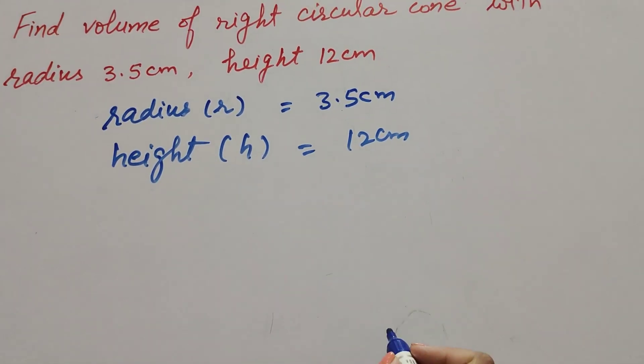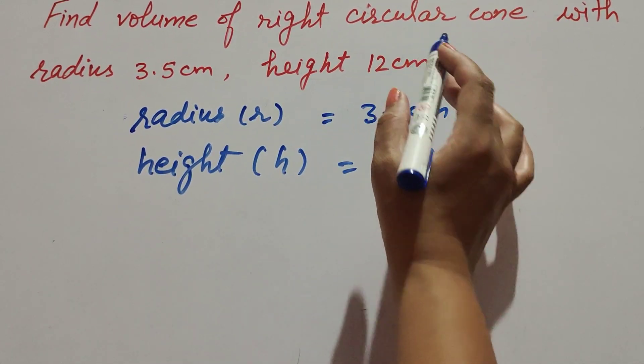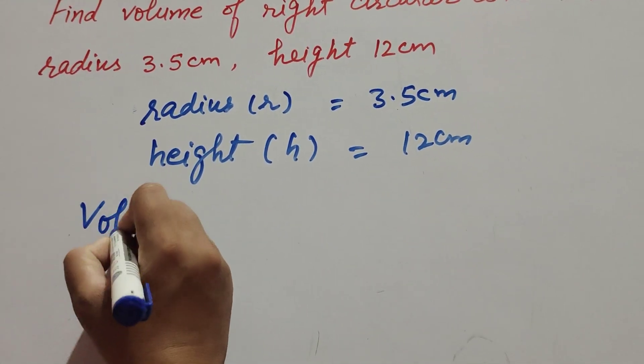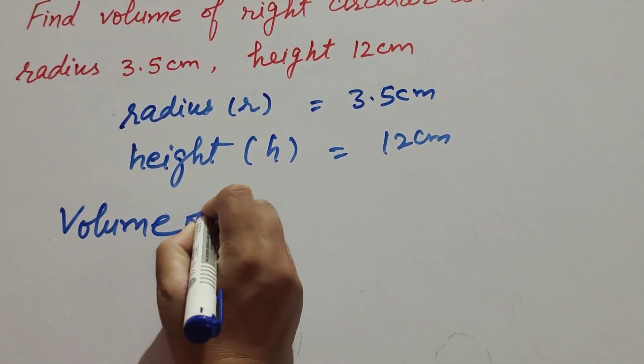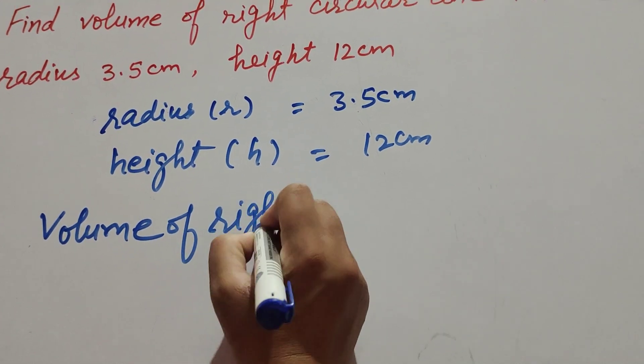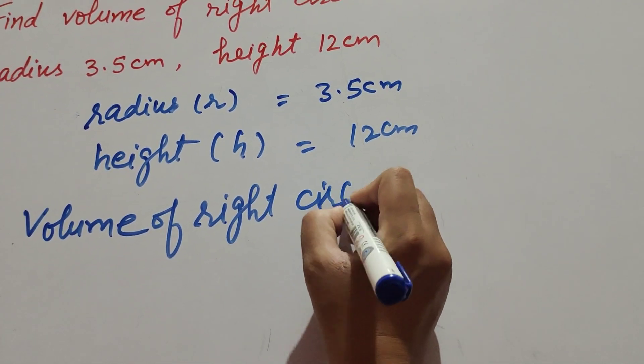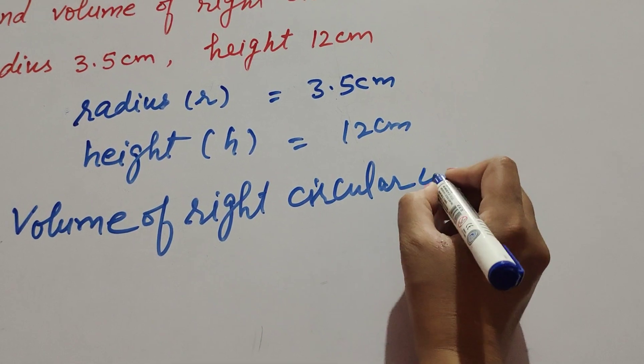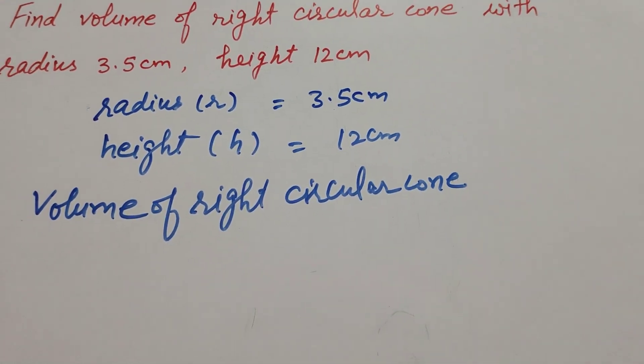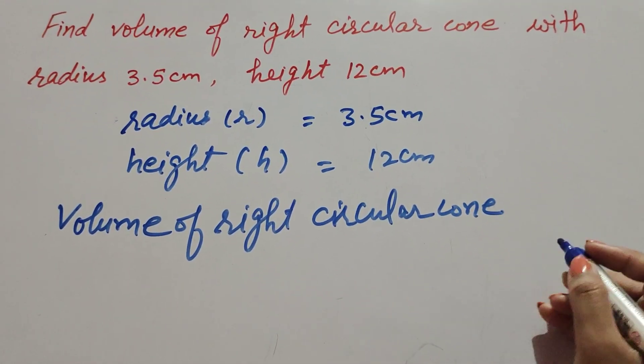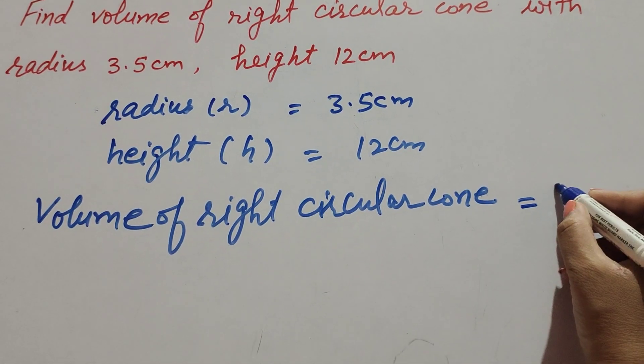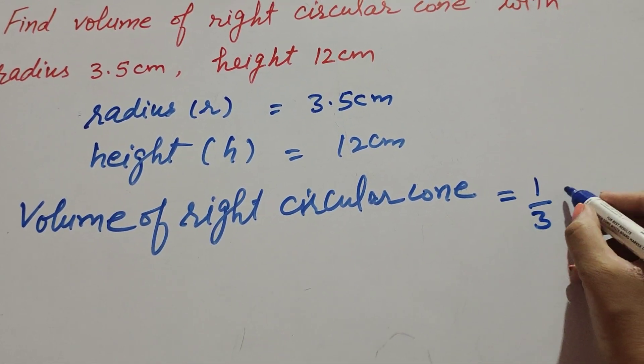We find volume of right circular cone. Its radius and height are given. We know the formula to find volume of right circular cone: it equals one-third pi r squared h.